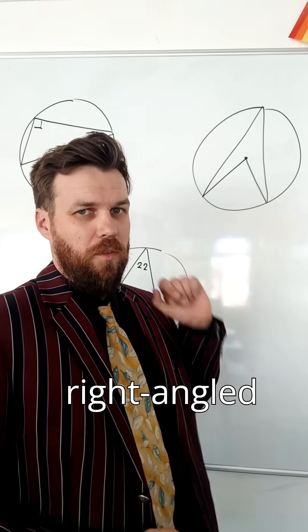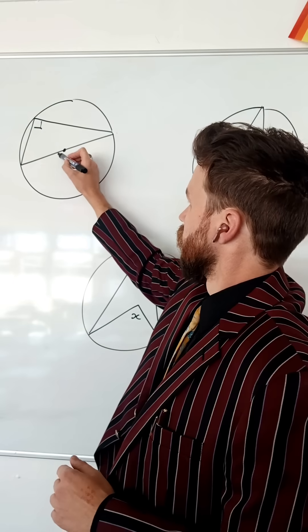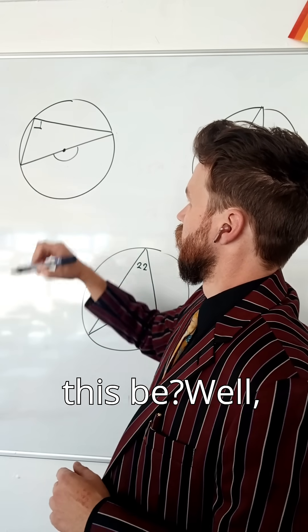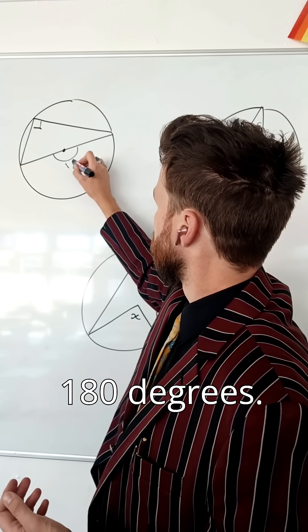But what happens if it's not a right-angled triangle? Well, going back to this one, if this is right-angled, what would this be? Well, this is a straight line, so it must be 180 degrees.